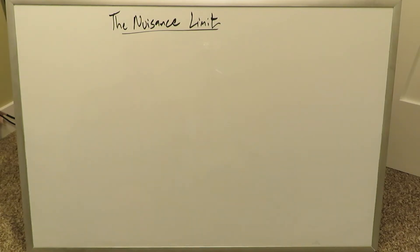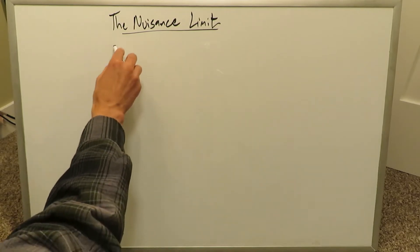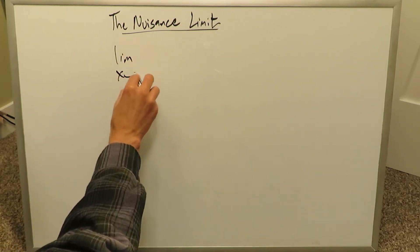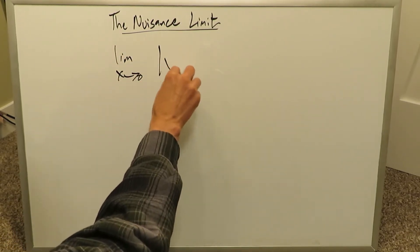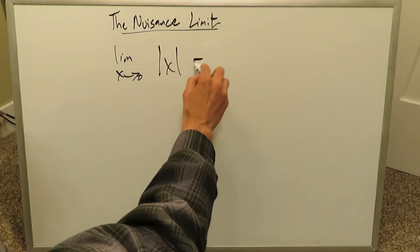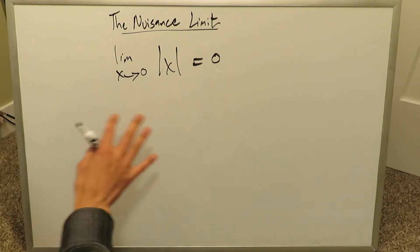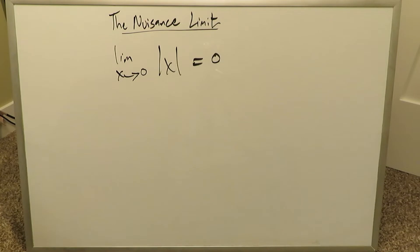Good evening. I am Mr. Ish. There is a limit out there — I'm calling it the nuisance limit. It's actually very simple seemingly, but when it's handled by most students, it's handled incorrectly. The limit specifically is this: as x approaches 0, we're looking at the absolute value of x. Most students will go and answer 0, and that answer is wrong, as I will explain in this video.